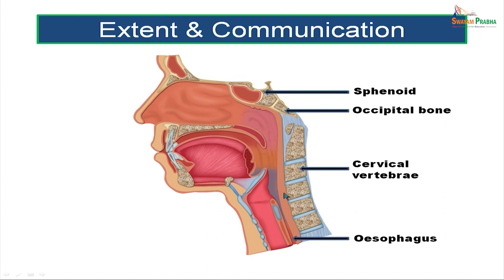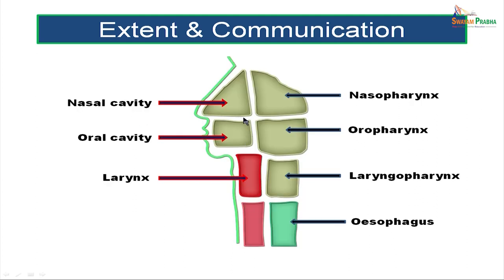The pharynx is divided into three subdivisions based on its communications. The part communicating with the nasal cavity is called the nasopharynx. The part communicating with the oral cavity is the oropharynx. The lowest part communicating with the larynx is the laryngopharynx. Below the laryngopharynx continues as the esophagus, while the larynx continues as the trachea.